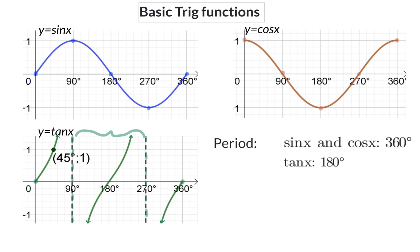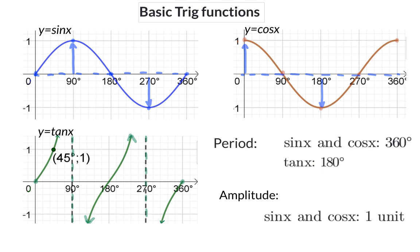The second important definition is the amplitude of the graph. The amplitude is the maximum displacement from the resting position or from the midline of the graph. The tan graph does not have a maximum displacement and therefore does not have an amplitude. For the sin as well as the cos graph, the maximum displacement up and down from the midline is exactly one unit.